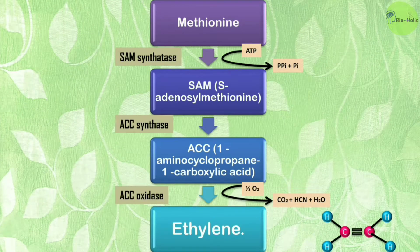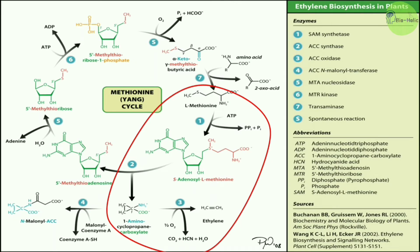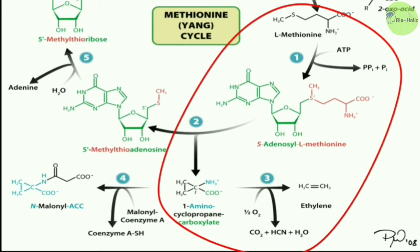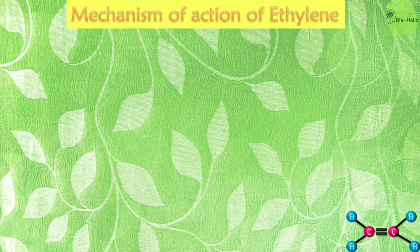The ethylene synthesis process is part of the Yang cycle. Since methionine is used for ethylene production, the Yang cycle allows methionine to be reproduced to its normal level. The steps inside the marked red circle are only used for ethylene synthesis, after which the pathway is reversed through the Yang cycle to regenerate methionine.